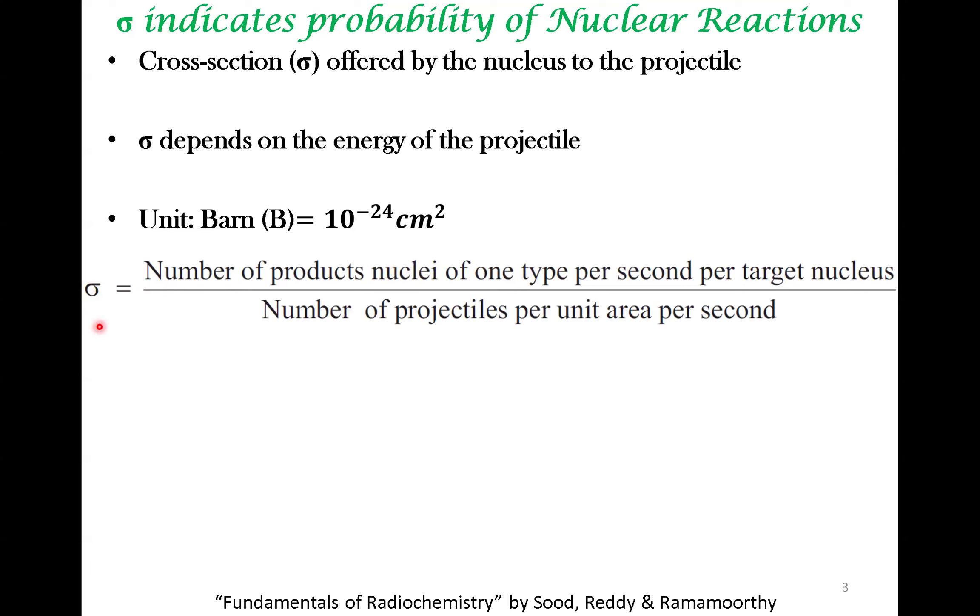The way to define sigma is the number of product nuclei of one type, per unit time per second per target nucleus, divided by the number of projectiles per unit area per second. This is one way to define sigma.